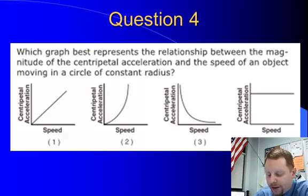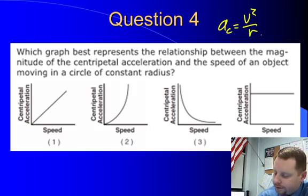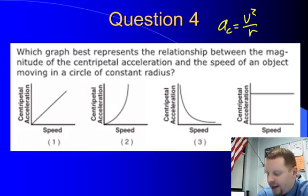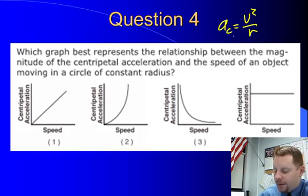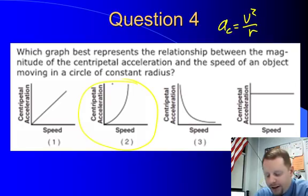Question four, which graph best represents the relationship between the magnitude of the centripetal acceleration and the speed of an object moving in a circle of constant radius? So we're trying to relate centripetal acceleration and the speed of an object. Well, our formula, if you recall, AC equals V squared over R. So our speed, V, is a square relationship. Therefore, we should see a big change in AC with little changes in V squared. A square law relationship looks like number 2.